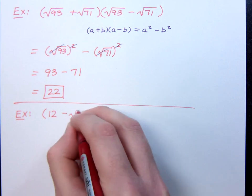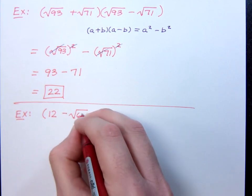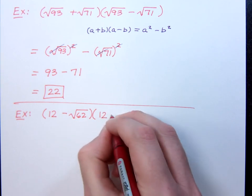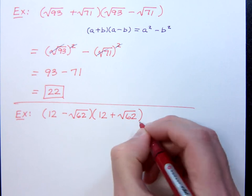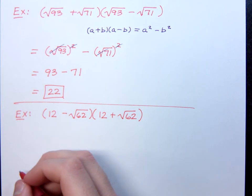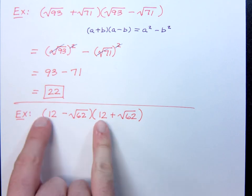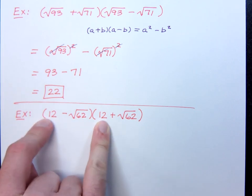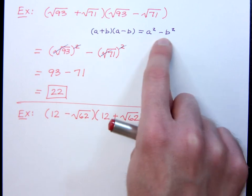If I have 12 minus the square root of 62 times 12 plus the square root of 62. Do I get to use the difference of squares formula here? Remember, you have to look for what we call conjugates. Are the first terms the same? Yes. Are the second terms the same except for a sign? Yes. Then that falls into this formula that we have here for the difference of squares.